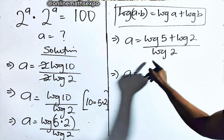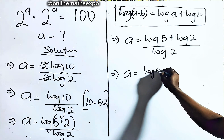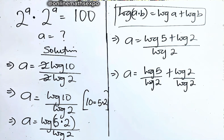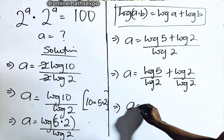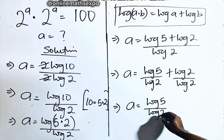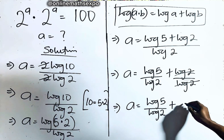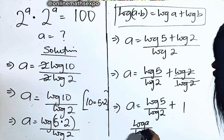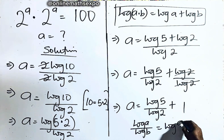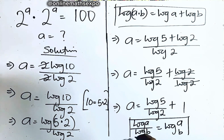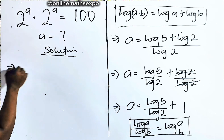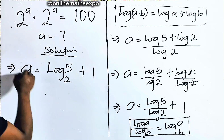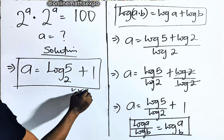We use log 2 to divide each term. So we have log of 5 divided by log of 2, plus log of 2 divided by log of 2. That second term divides to give us 1. Now remember, for every log of a divided by log of b, it is log of a base b — the change of base rule. Applying this gives us a is equal to log of 5 base 2 plus 1. And this is the simplified value of a.